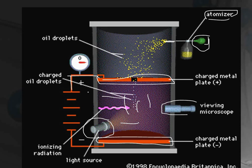The air was ionized by using X-rays, and so the oil droplets falling down also gained electrons — that means they gained a negative charge. The oil droplets gained the electrons, or in other words, they gained a negative charge.